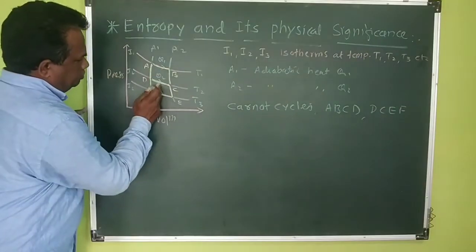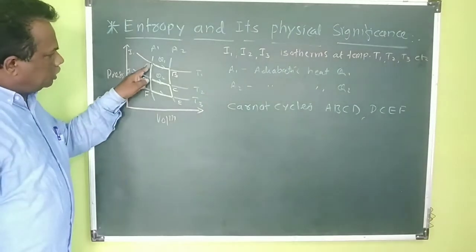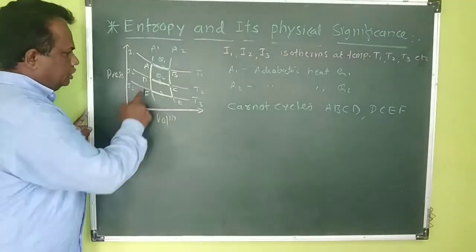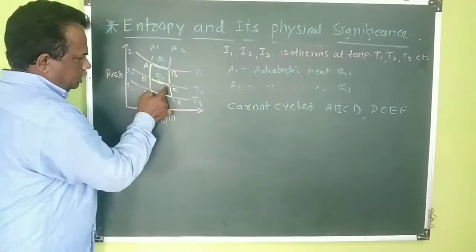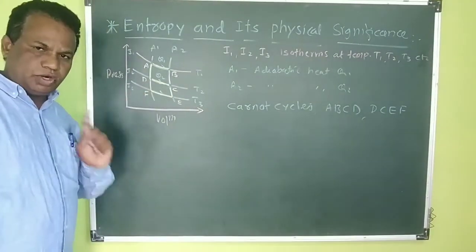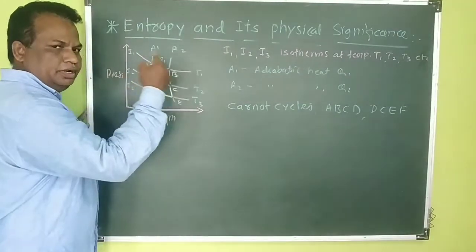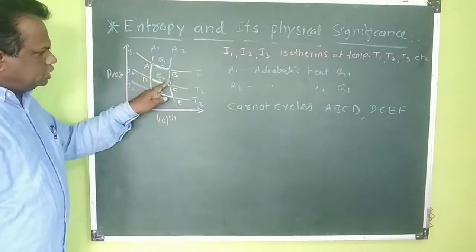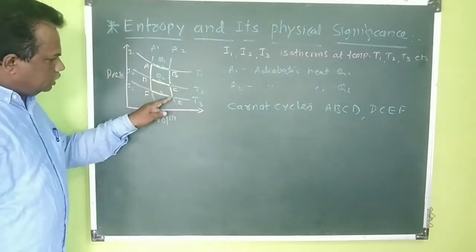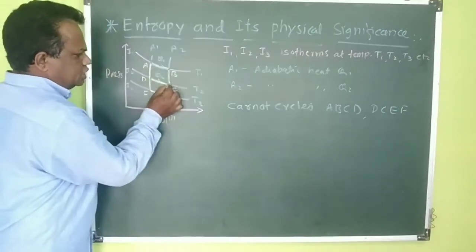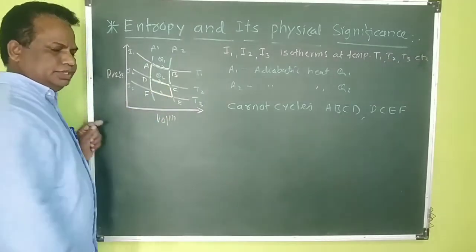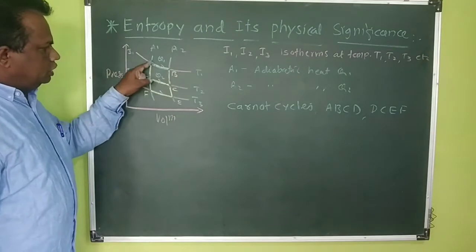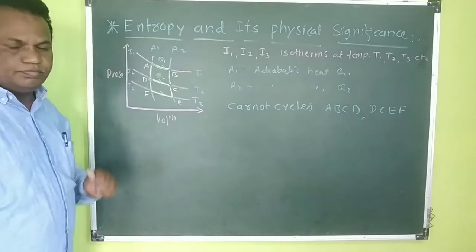Each Carnot cycle consists of four thermodynamic processes: isothermal expansion, adiabatic expansion, isothermal compression, and adiabatic compression. So each Carnot cycle has two isothermal processes — one compression and one expansion — and two adiabatic processes. The second Carnot cycle D, C, E, F, D similarly returns to the original state but with different energy changes through the adiabatic steps.